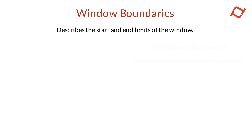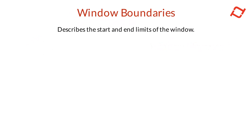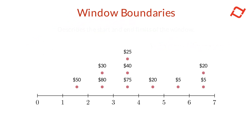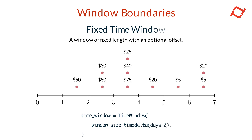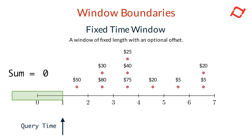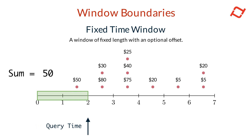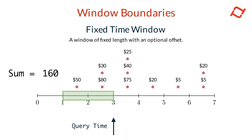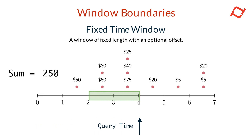There are three kinds of window boundaries. The first is the fixed time window — a window of fixed length that stretches backwards from a given timestamp. This is useful for calculating aggregations over a constant time span. In this example, we use a fixed time window of two days.